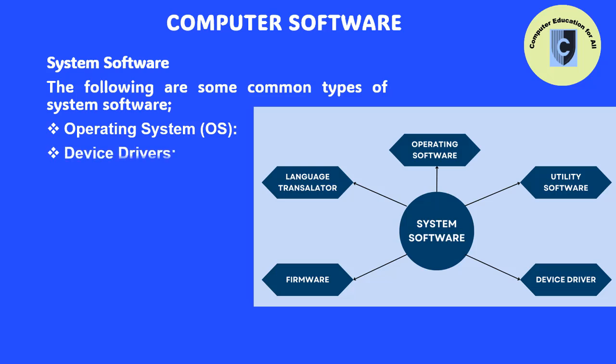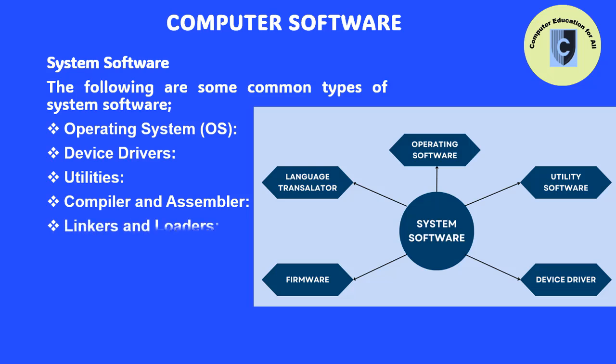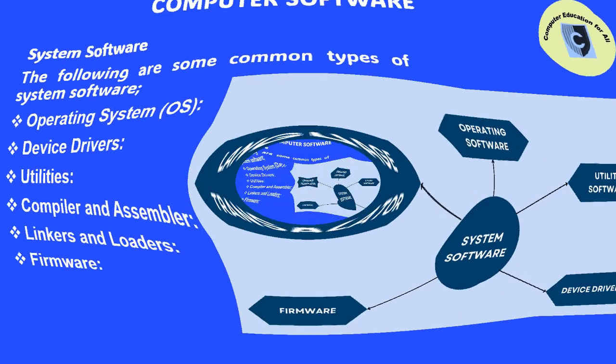The following are some common types of system software: operating system (OS), device drivers, utilities, compiler and assembler, linkers and loaders, and firmware.